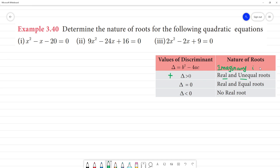Delta is equal to 0, so real and equal roots. The two roots are equal. Now, delta is less than 0. We will have minus, so there are no real roots. That is an imaginary number.